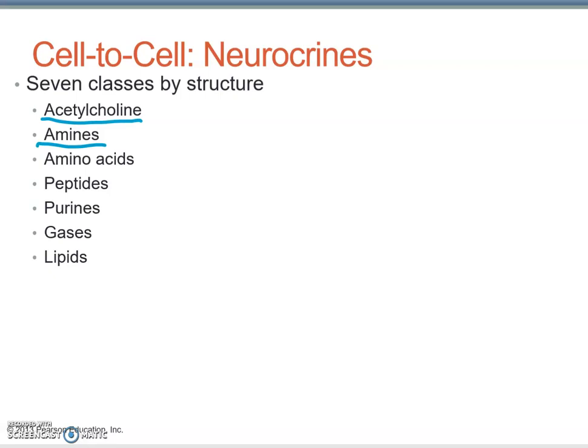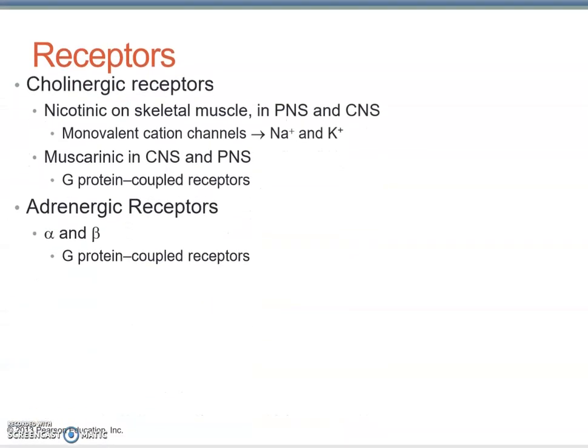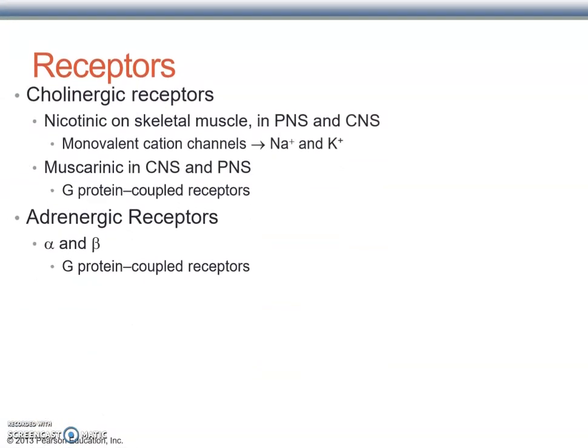Other neurotransmitters include amino acids such as glycine, short peptides acting as neurotransmitters, purines — a type of base also incorporated in DNA, such as adenine-type bases — gases such as nitric oxide (NO), and lipids. But again, the most important neurotransmitters for this class by far are acetylcholine and norepinephrine.